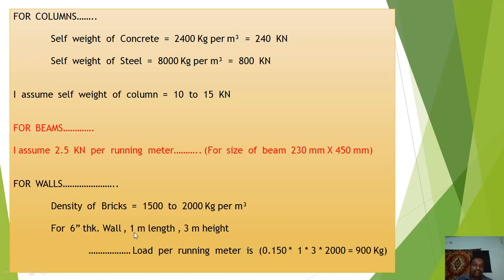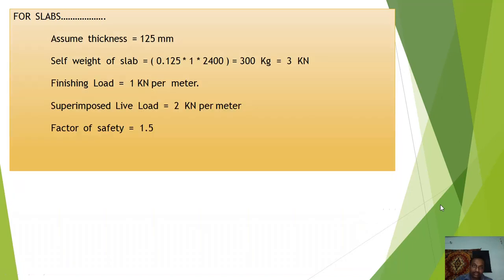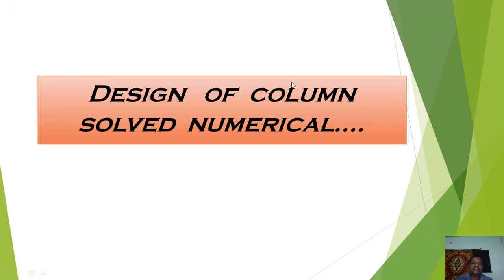For walls, density of bricks is 1500 to 2000 kg/m³. For a 6-inch thick wall of 1 m length and 3 m height, load per running meter = 0.150 × 1 × 3 × 2000 = 900 kg. For slabs, assuming thickness of 125 mm, self weight = 0.125 × 2400 = 300 kg/m² = 3 kN/m². Finishing load is 1 kN/m², live load is 2 kN/m², and factor of safety is 1.5. Refer IS 875 Part 1, 2, 3 and IS 456 for design.